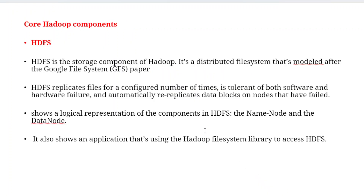The basic core Hadoop components include HDFS. HDFS is the storage component of Hadoop — it plays a vital role and is a distributed file system modeled after the GFS paper. HDFS replicates data for a configured number of times; for example, data is maintained in three different copies on three different nodes. Both hardware and software managers are present, and data blocks can be automatically re-replicated on failed nodes.